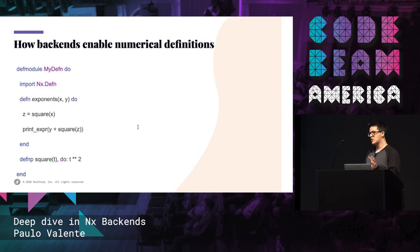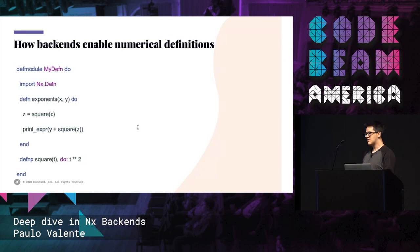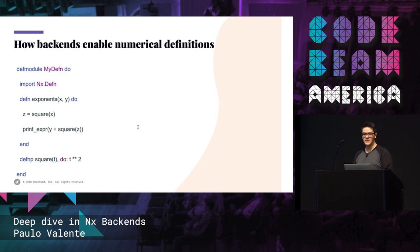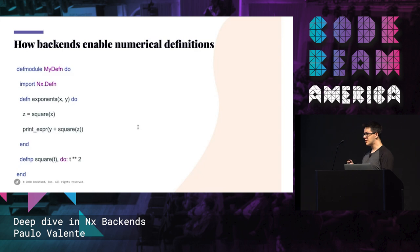This is a typical module that you could write using NX DEFN. It's basically a function that uses different mathematical expressions. Notice that we're importing NX DEFN and using DEFN and DEFNP declarations. DEFN and DEFNP will rewrite the Elixir kernel using the NX DEFN kernel instead. So when we see the addition operator, it's actually an NX DEFN call instead of the kernel addition operation. The same with the exponent operator as well.